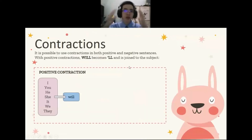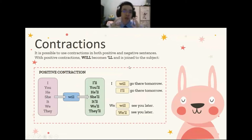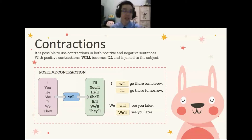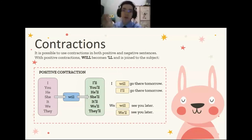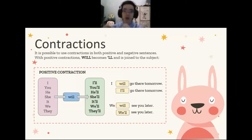I will talk about contractions. Contractions mean to contract something, to make something shorter. It is possible to use contractions in both positive and negative sentences. With positive contractions, will becomes apostrophe LL and it's joined to the subject — subject plus apostrophe LL. For example, I will go there tomorrow becomes I'll go there tomorrow.